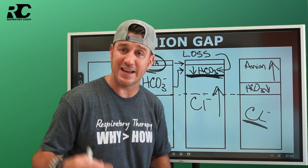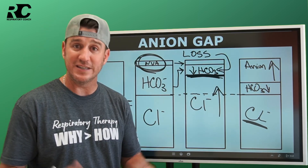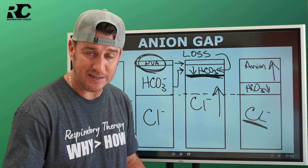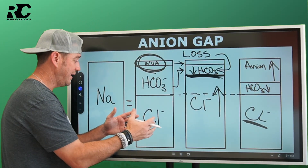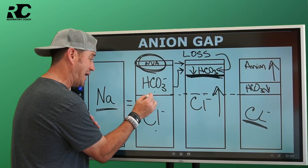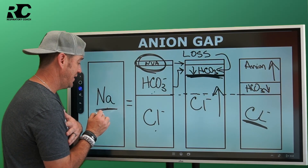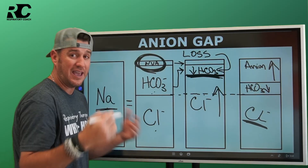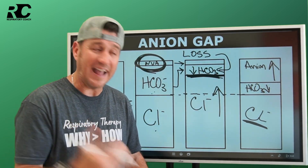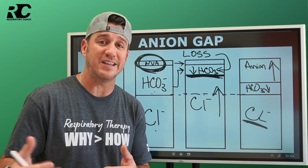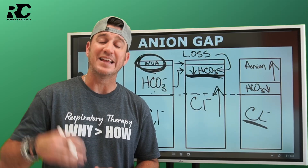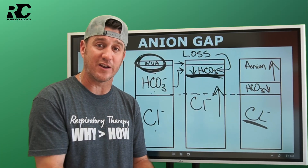So what is an elevated anion gap? According to Egan's, the normal anion gap range is 8 to 16. The formula is: sodium minus the sum of chloride plus bicarb. When you subtract chloride and bicarb from sodium, you're left with your non-volatile acids — that is your anion gap. As respiratory therapists, we need to understand this so we can demonstrate our knowledge at the bedside and recognize that giving bicarb is not the answer to every metabolic acidosis.